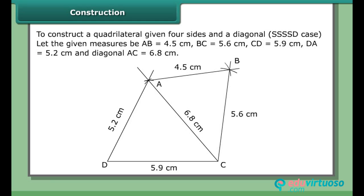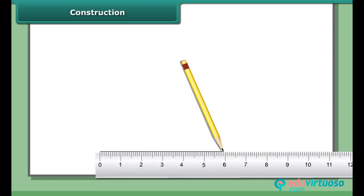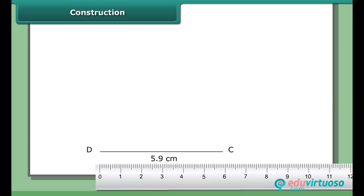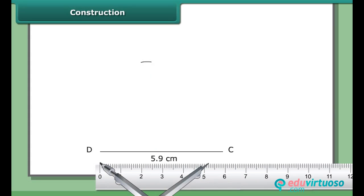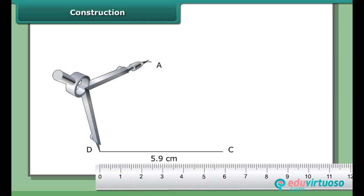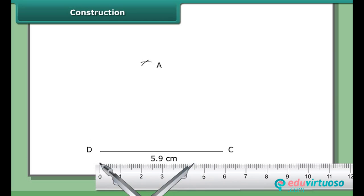Let the given measures be AB = 4.5 cm, BC = 5.6 cm, CD = 5.9 cm, DA = 5.2 cm, and diagonal AC = 6.6 cm. With radius 5.6 cm, draw another arc to cut the previous arc at A. Join CA and DA.